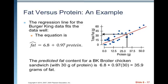The regression line for the Burger King data fits the data well. The equation is predicted fat equals 6.8 plus 0.97 times protein. The predicted fat content for a BK broiler chicken sandwich with 30 grams of protein is 6.8 plus 0.97 times 30, and that equals 35.9 grams of fat.